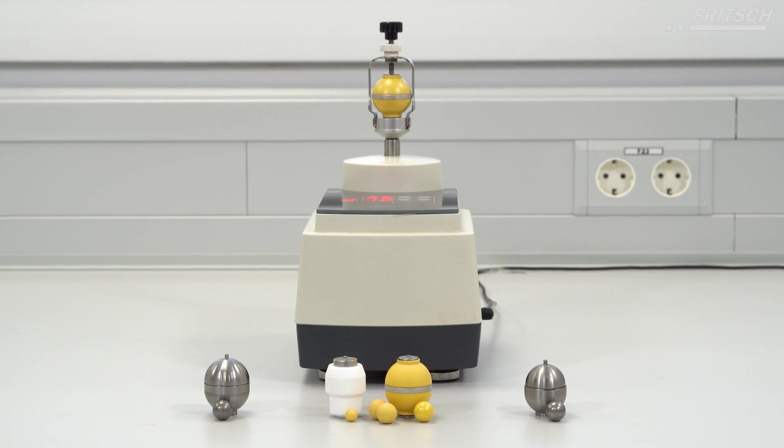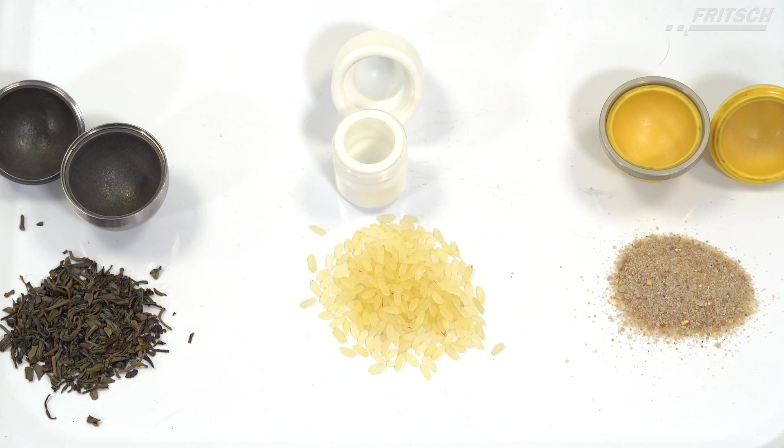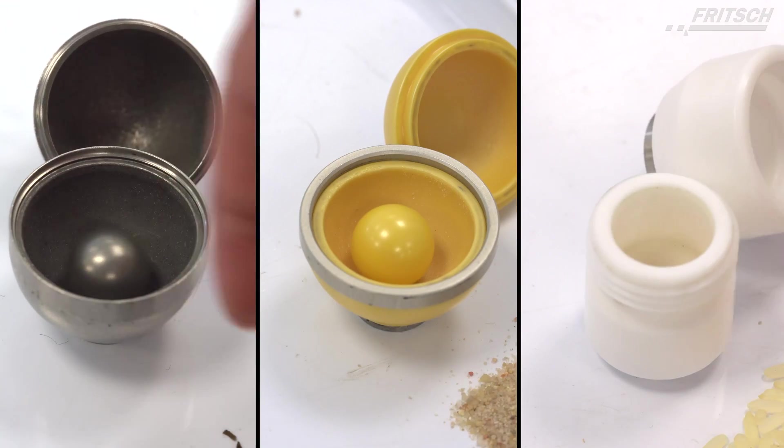The Fritsch Pulverisette 23: unmatched effectiveness. The ultra-compact Fritsch MiniMill is ideal for fine comminution of smallest quantities of medium-hard, brittle, and moist samples—wet, dry, or cryogenic.